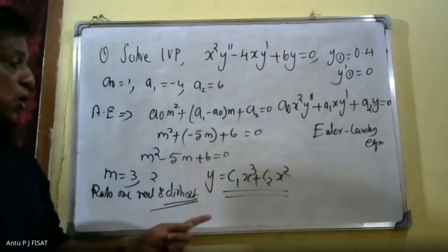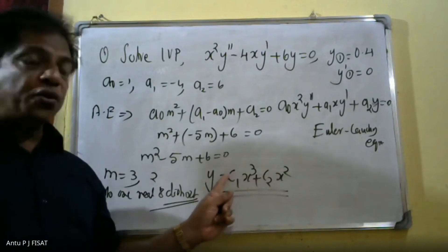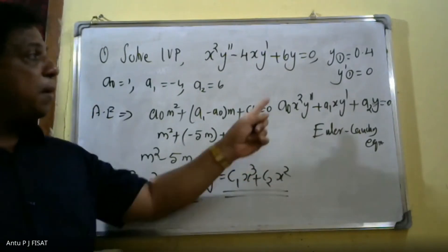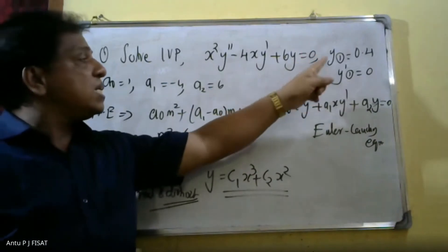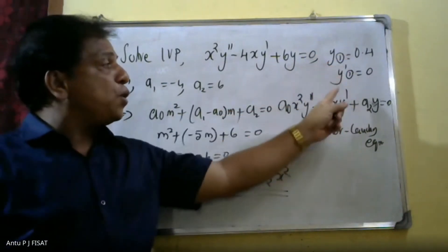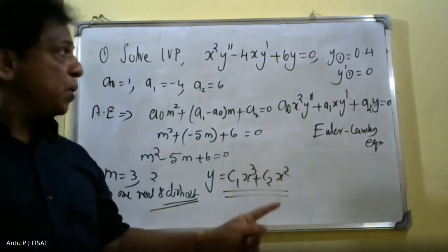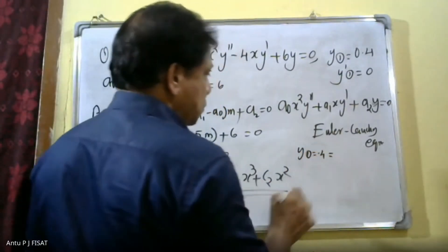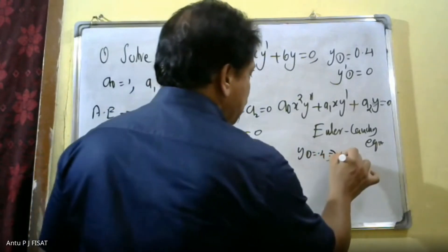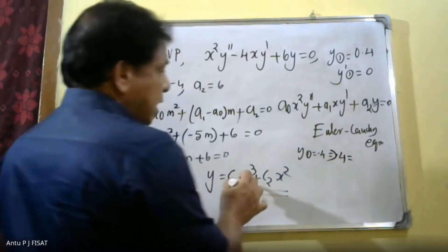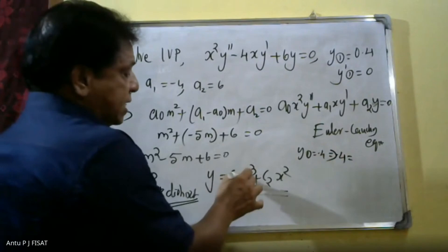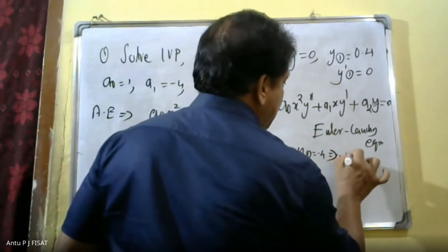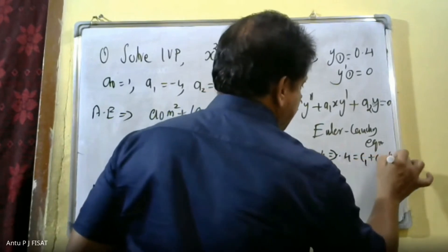Next, we need to find the values of c₁ and c₂ by applying the initial conditions. Applying y(1) = 0.4: substituting x = 1 gives 0.4 = c₁ + c₂. This is equation 1.